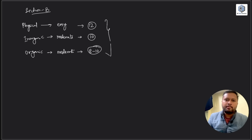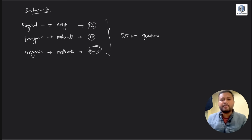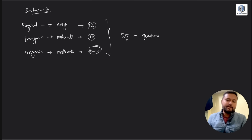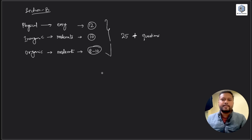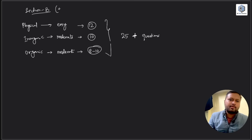From Organic Chemistry, based on student feedback, it was moderate — not that difficult, not that easy. Taking 8 to 10 questions as doable from Organic Chemistry, overall from Section B you could do 25 or more questions. Section B was the scoring part this time — easy to moderate — and doing more questions here could compensate for fewer attempts in Section C, though you'd need double the questions.